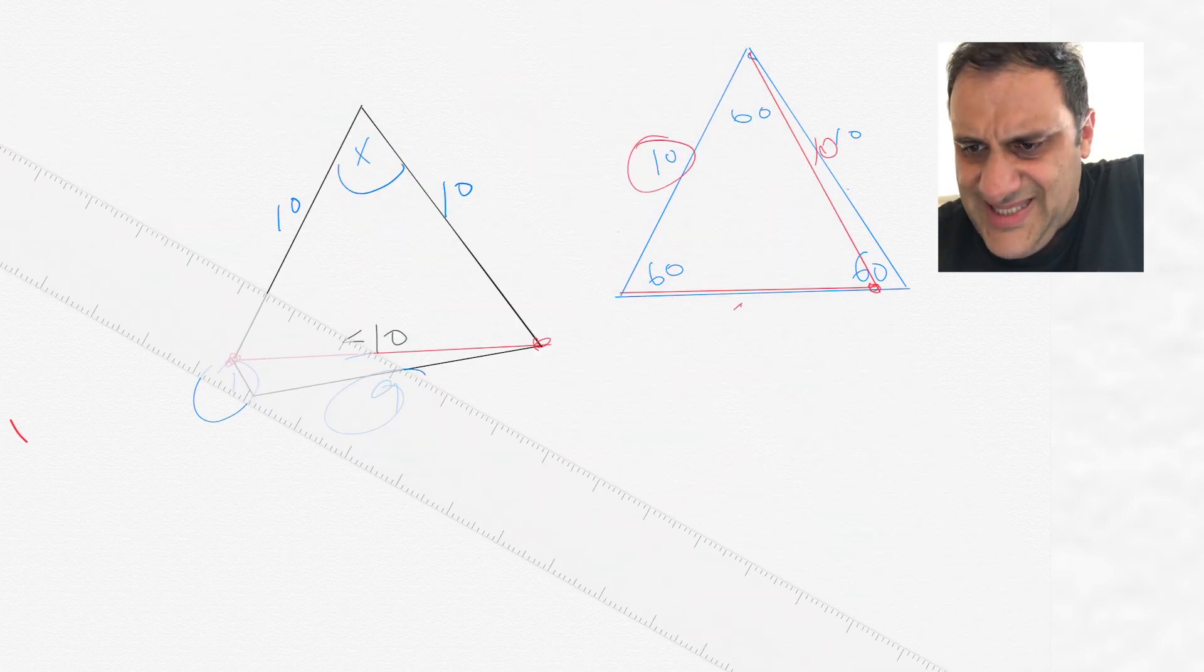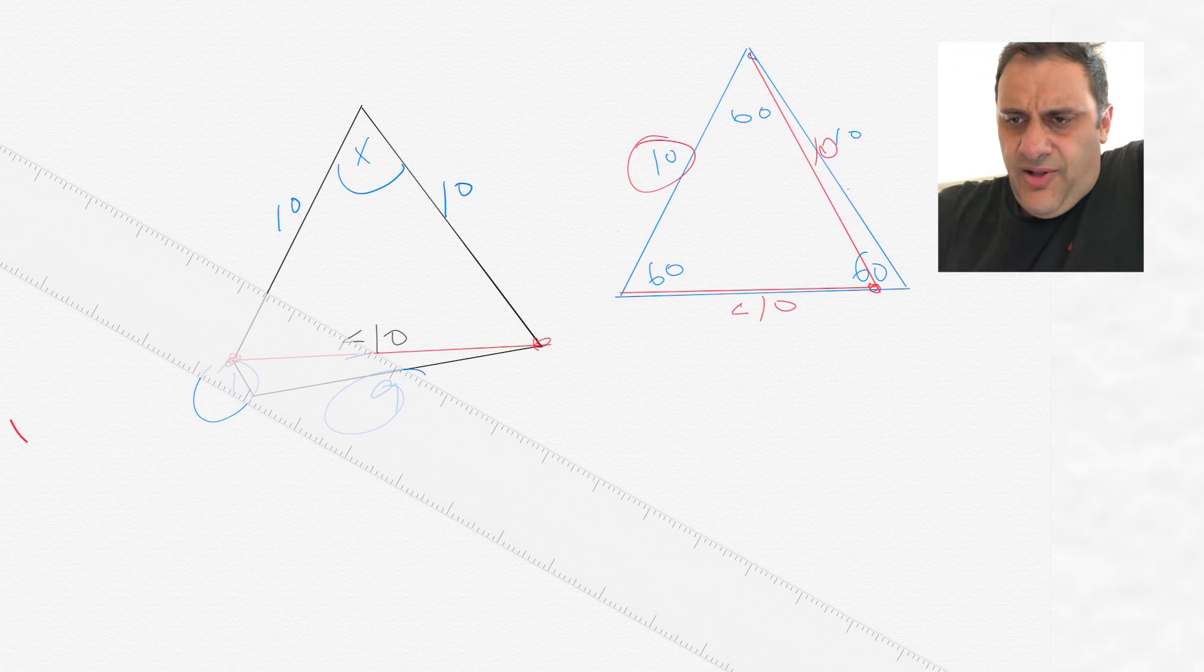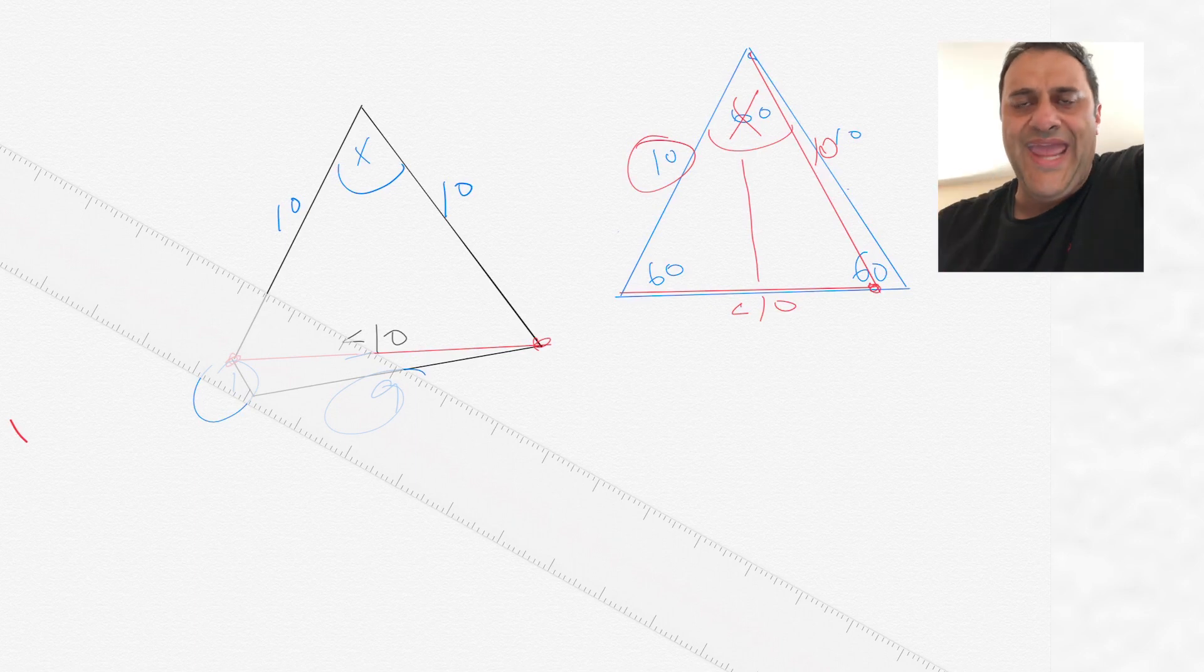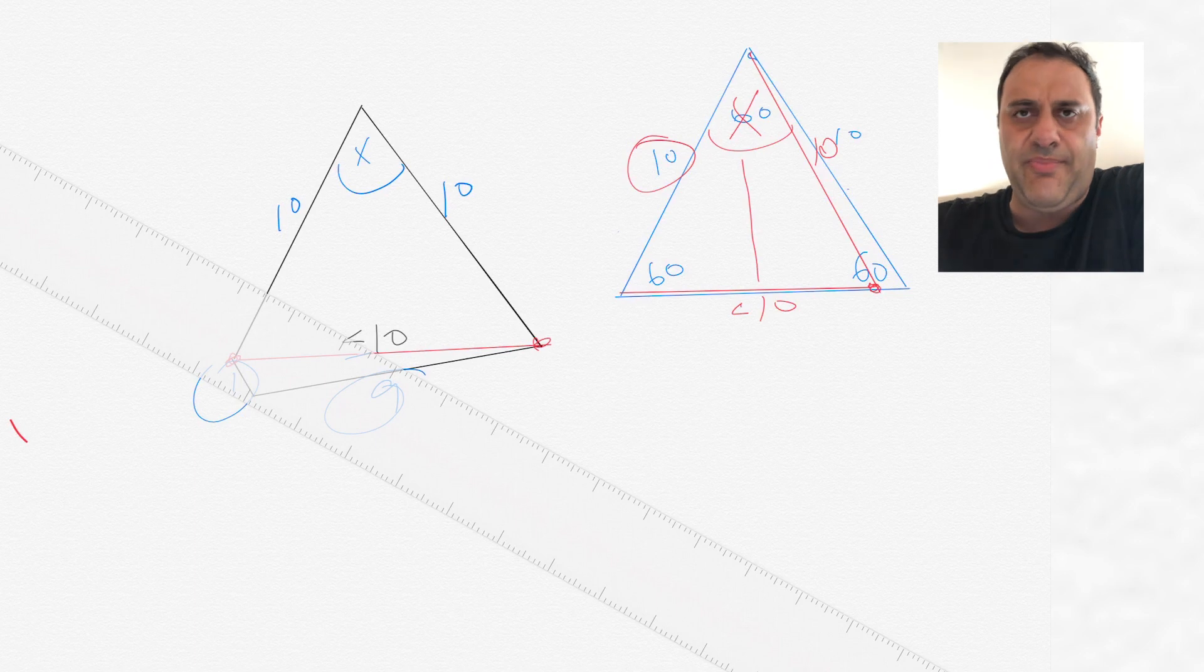This side is still 10, and this is something less than 10. Then the angle which is up here, the angle that opposes the smallest side would be the smallest angle, and the other angles that oppose the bigger side would be bigger angles.